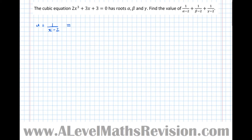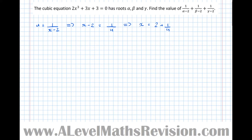Because we can rearrange this to get it in terms of x: x - 2 = 1/u, which implies that x = 2 + 1/u. So now we can substitute this back into our original equation to get a new equation with the roots that we want. We wanted our u roots to be 1 over our x roots take 2, so if we rearrange that for x, we can sub back into the original equation to get a new equation with the desired properties.